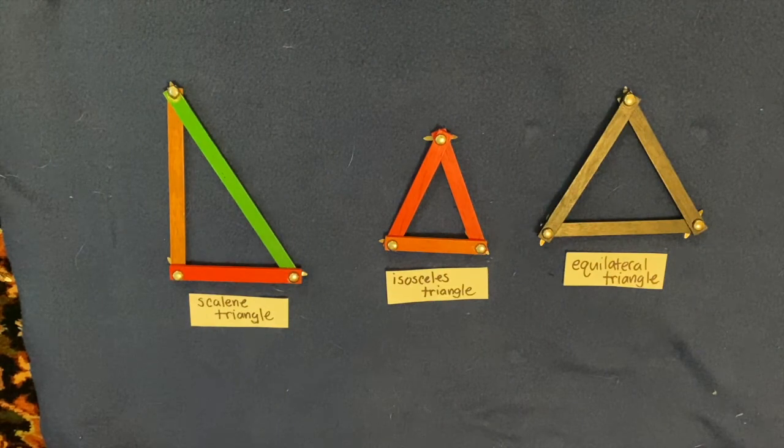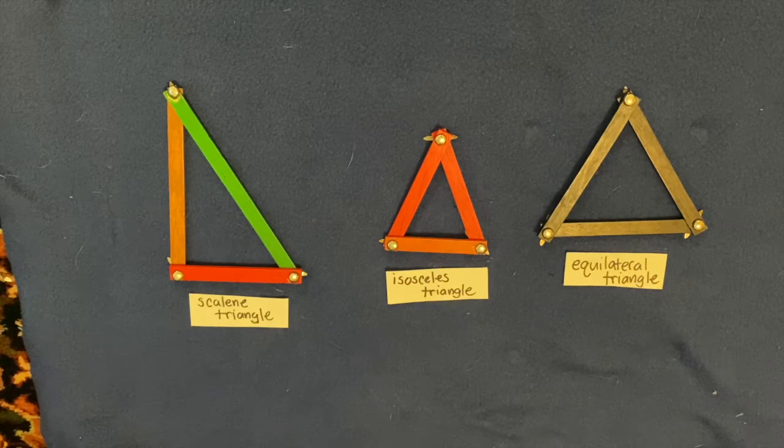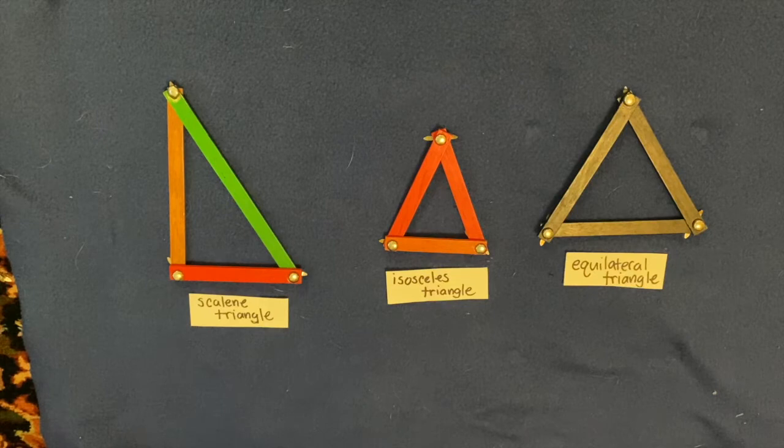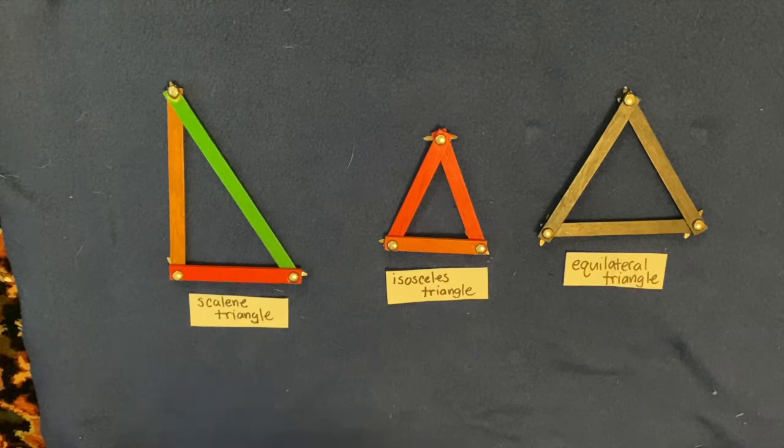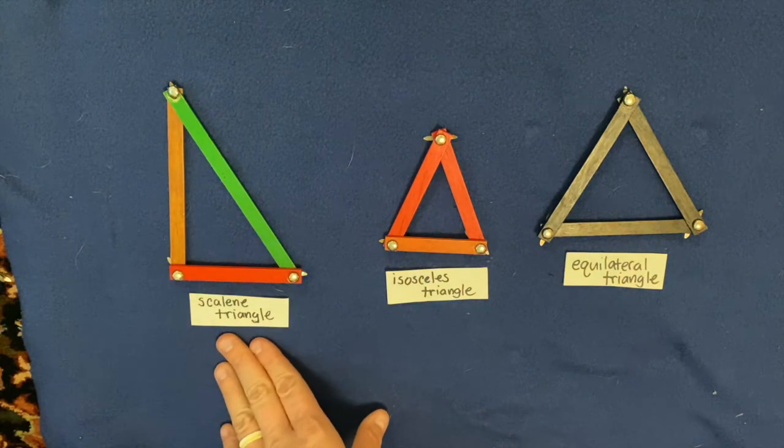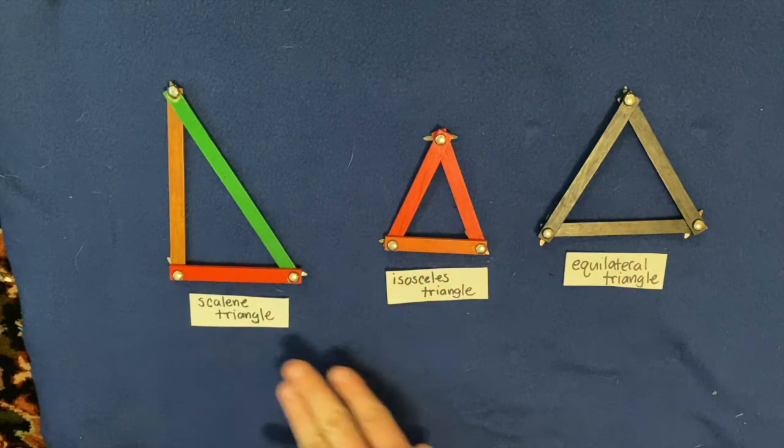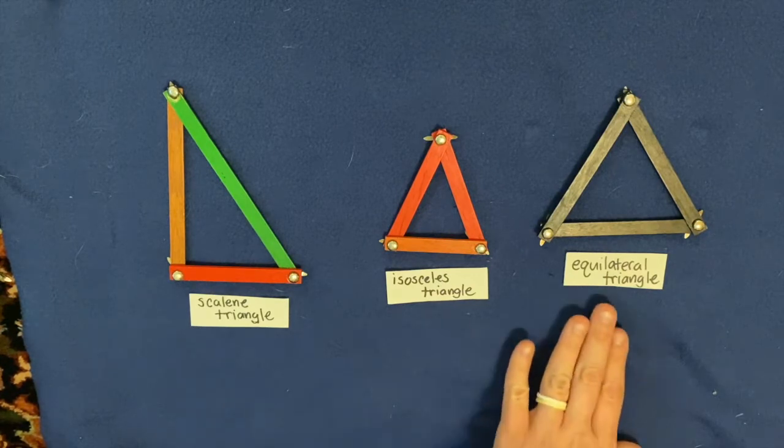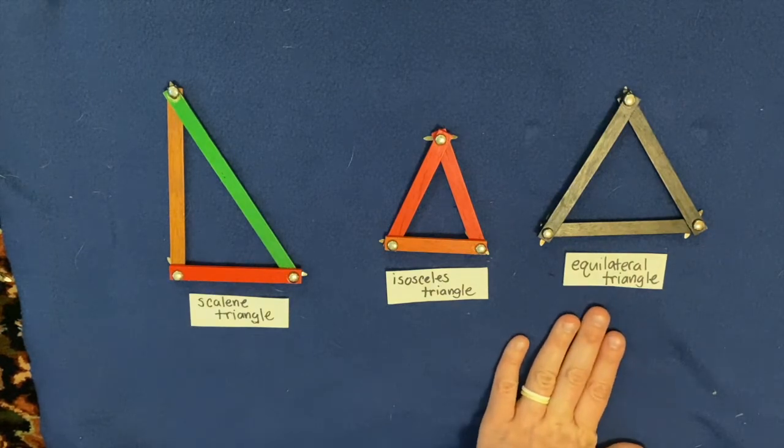So what I want you to do is go around your house and find different things that are triangular that you can either trace and then measure using a ruler, or you can just use a ruler or tape measure to measure any kind of triangle in your house. And I want you to classify those triangles as either scalene with three sides that are different lengths, isosceles with two sides that are the same, or equilateral triangles which all three sides are the same length.